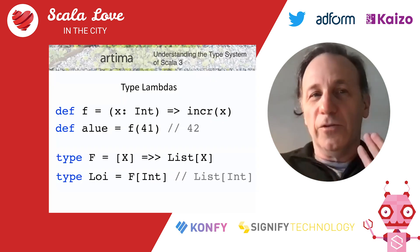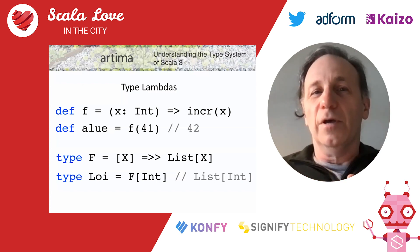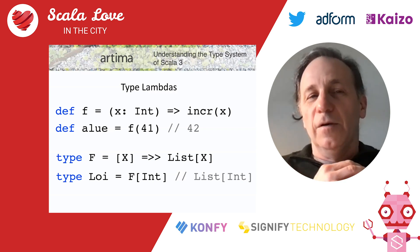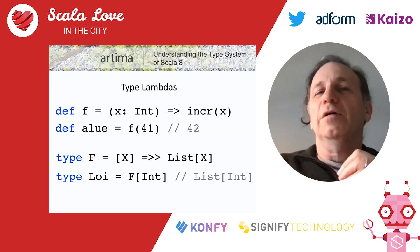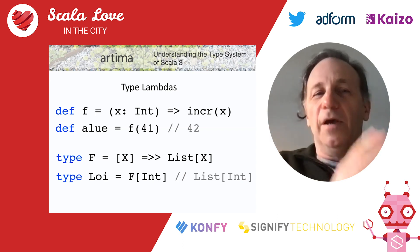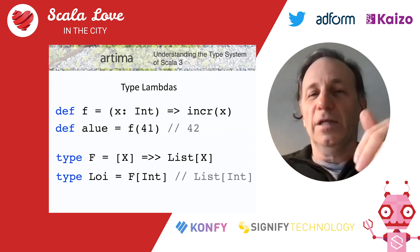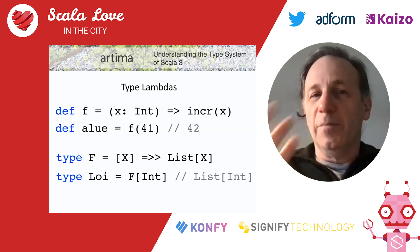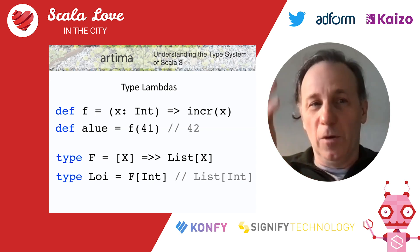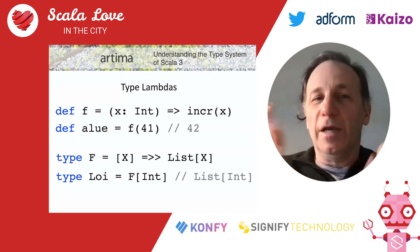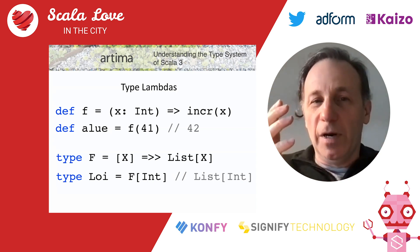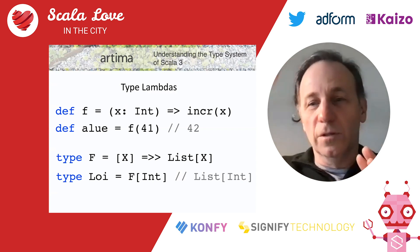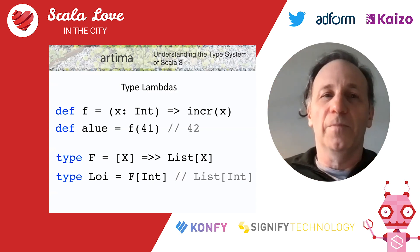This is comparing the type level and term level. At the term level I have def f, which always returns a term lambda that takes an int and increments it. Below, type F is the type lambda that takes X and passes it to List. I can apply it: at the term level, f of 41 gives 42; at the type level, F of Int gives List of Int. They work consistently with each other.